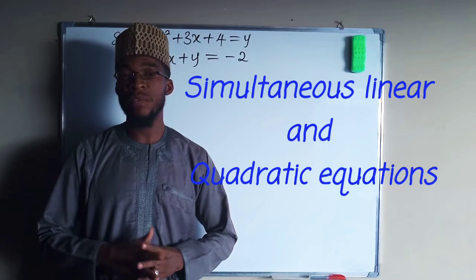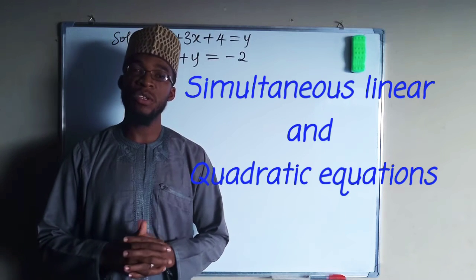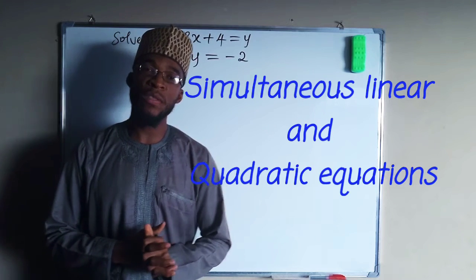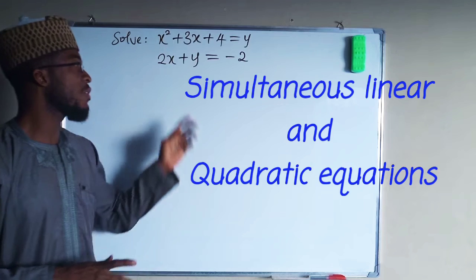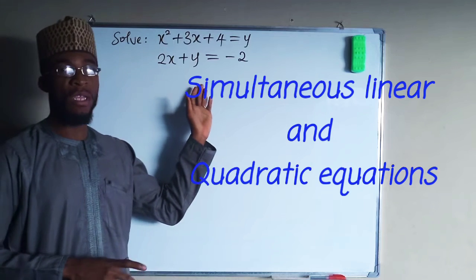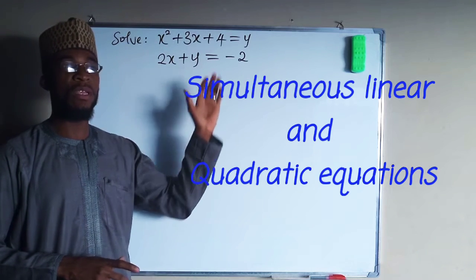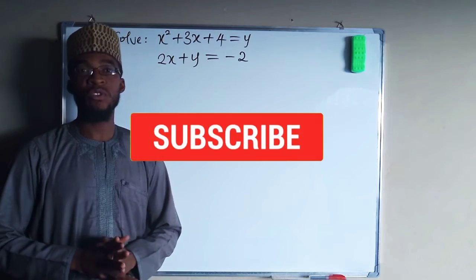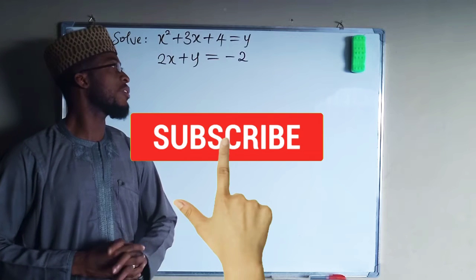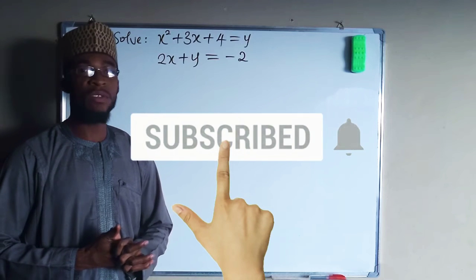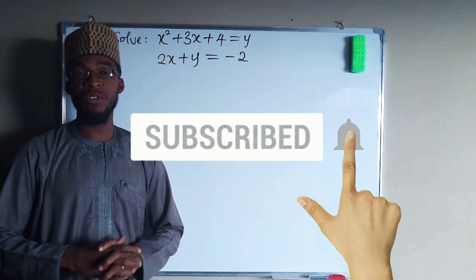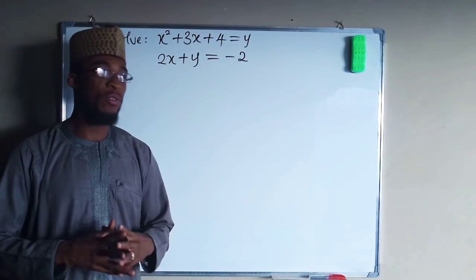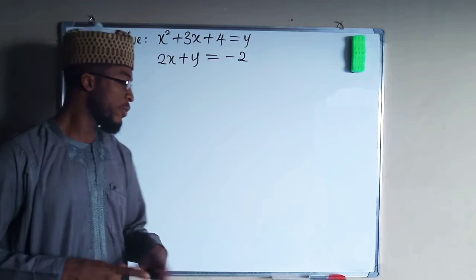Sometimes you might be given simultaneous equations where one equation is linear and the other is quadratic. The best way to solve these is by substitution, and you can also use graphical solutions.